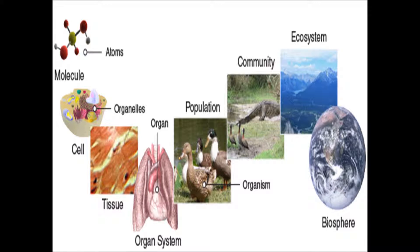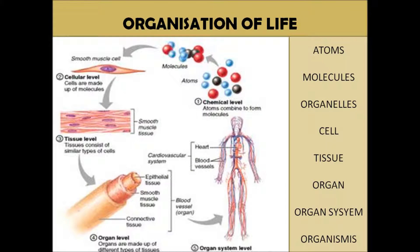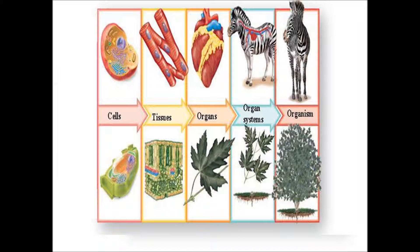The biosphere includes all the living organisms on the planet. Hence, in a living system, organization starts at the level of atom and proceeds all the way up to organisms and beyond. Having learned the importance of organization and structure in relation to function, let us study in this chapter how living organisms are organized. We will start with the cell, which is the basic structural and functional unit of all living organisms, and study how cells are organized to form higher structures such as tissues in the next coming videos.